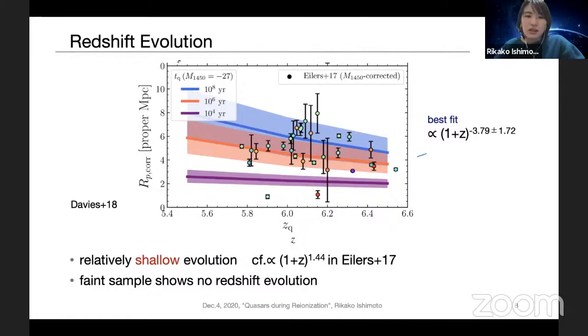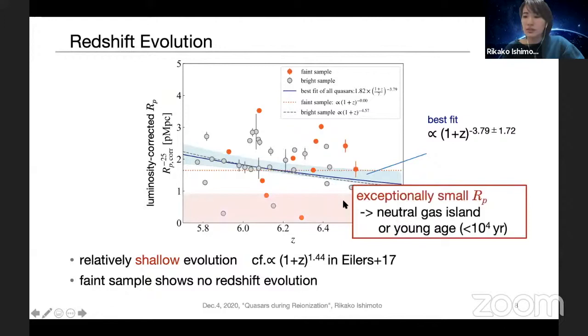in the simulation demonstrated that young quasars showing this purple line can have small proximity zone sizes. And in our normalization, this criteria corresponds to 0.9 megaparsec shown in this red region. Two quasars in the faint sample and two in the bright sample meet this criteria. And such small proximity zone suggests the young quasar age, younger than 10^4 years, or the existence of the neutral gas island in the Lyman alpha forest.